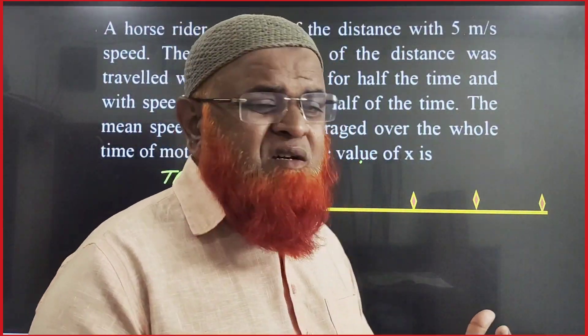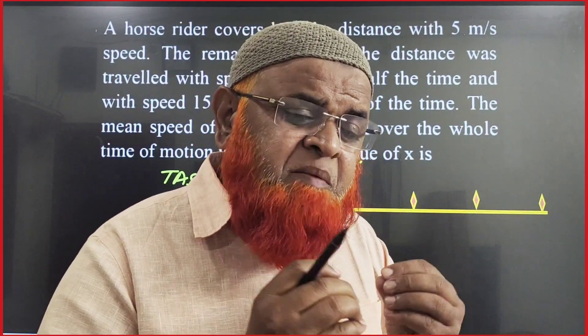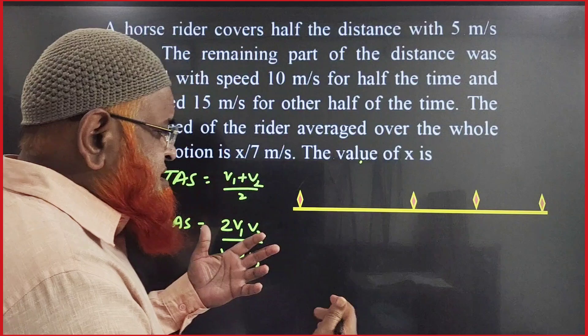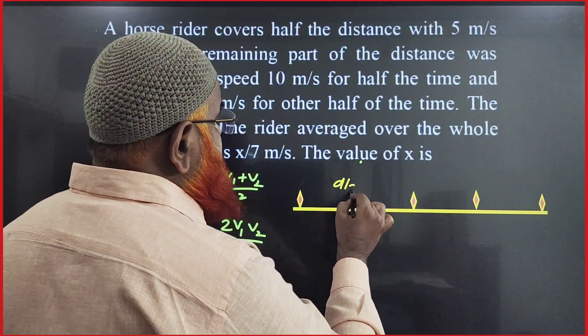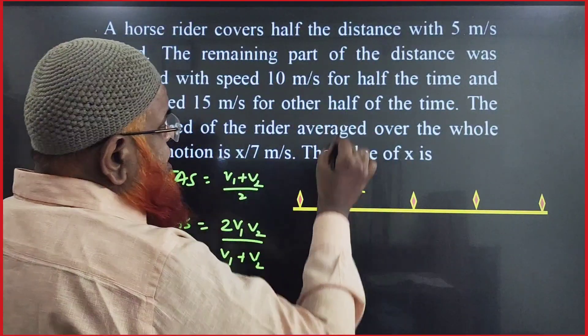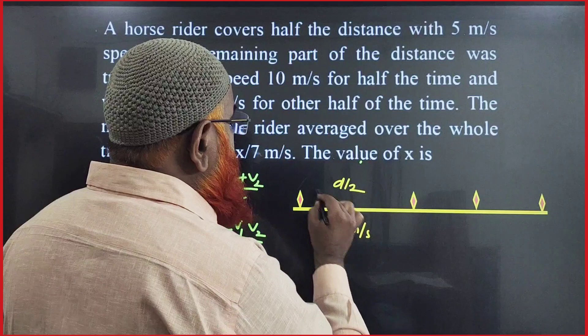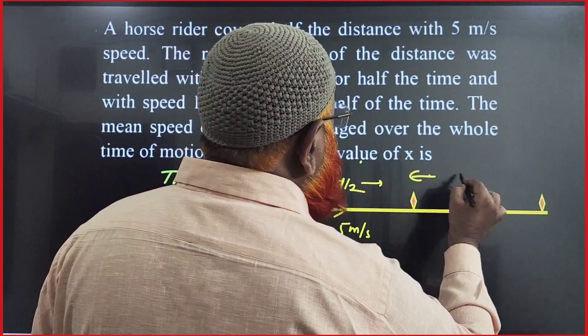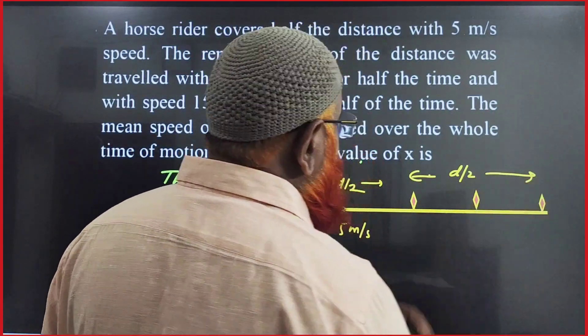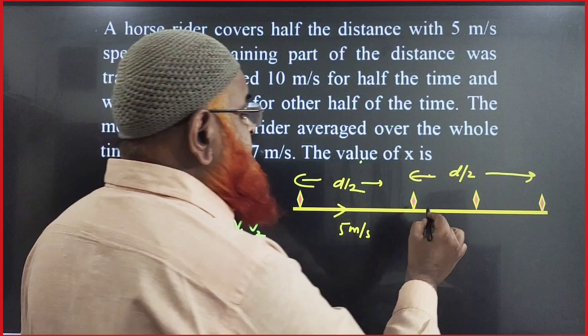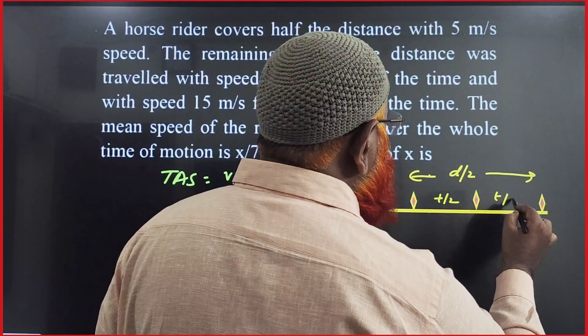Dear students, this is a mixed concept average velocity problem. In this case, the first half of the distance is covered at a speed of 5 meters per second. The remaining half of the distance is covered in two halves of time - this is half of the time and this is half of the time.